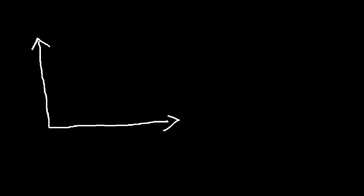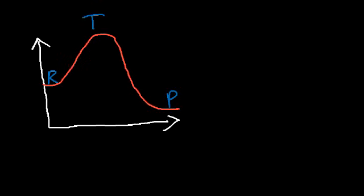We're going to go over potential energy diagrams. On the left you have the reactants and on the right the products. At the top of this diagram we have the transition state, also known as the activated complex. On the y-axis is the potential energy and on the x-axis is the reaction coordinate.